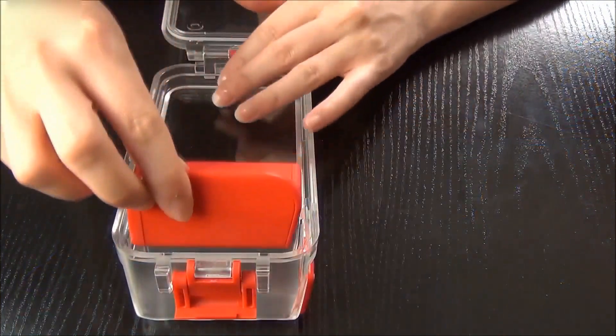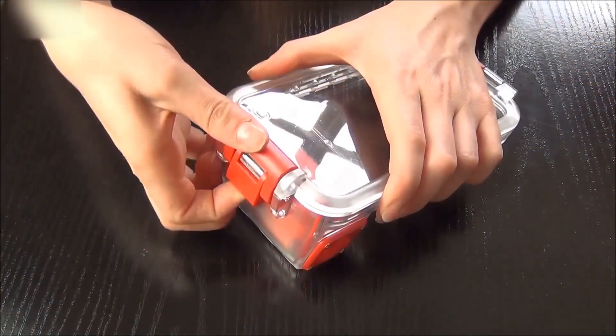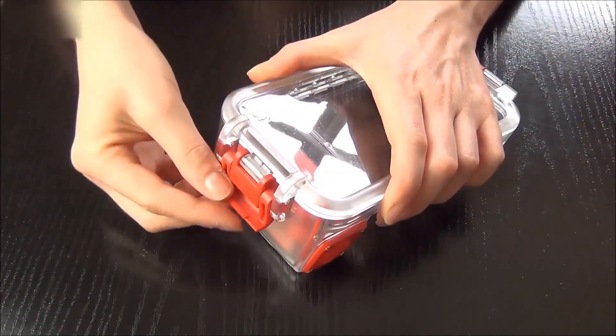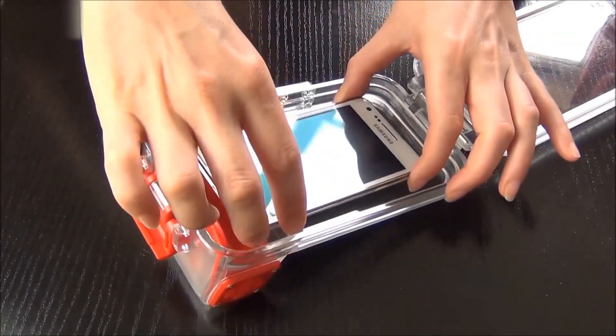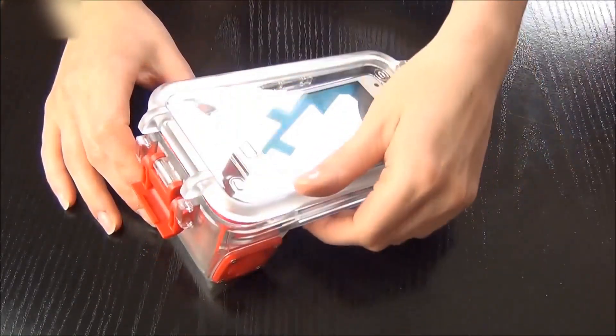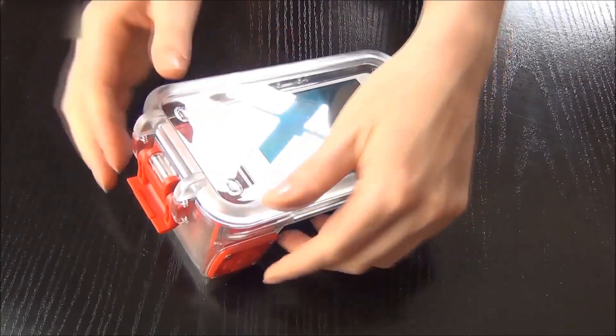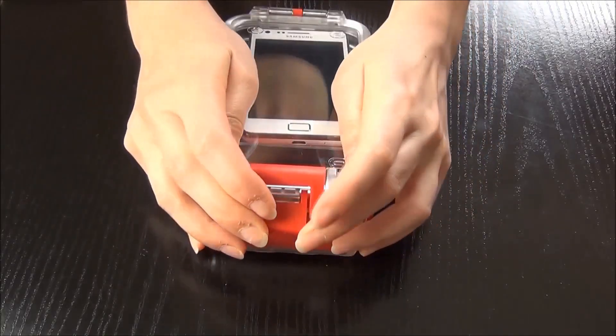Installing your phone in the case takes seconds. Flip open the buckle, insert your phone with the screen facing upwards, close the lid and squeeze the edges tightly shut. Close the buckle and you're ready to go.